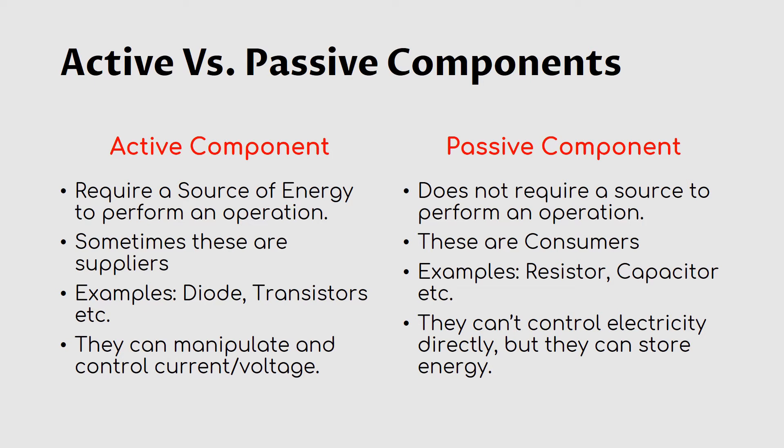A few examples of active components are diodes, transistors, etc. Popular examples of passive components are resistors, capacitors, etc. Active components can manipulate and control current or voltage, but passive components cannot directly control the current or voltage.